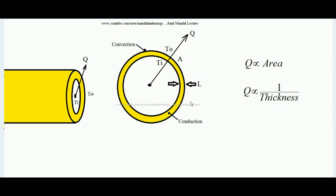We know that heat transfer rate q is proportional to the area of exposure through which heat is transferring. For this case, heat transfer rate is also inversely proportional to the thickness of insulation, because greater the thickness of insulation, greater the resistance in the path of heat transfer. So greater the outer peripheral area of exposure, greater the heat transfer rate delivered to the environment; and greater the thickness of insulation, lesser the heat transfer.